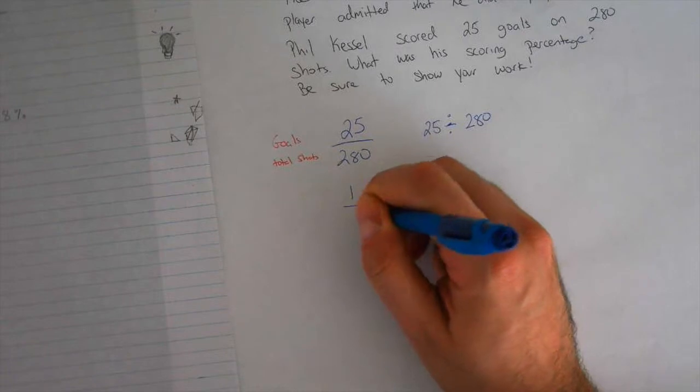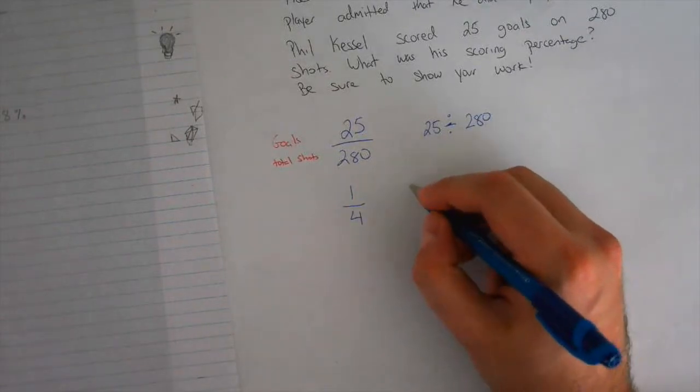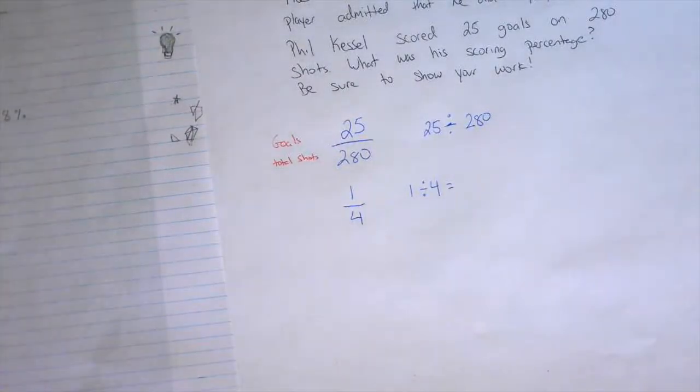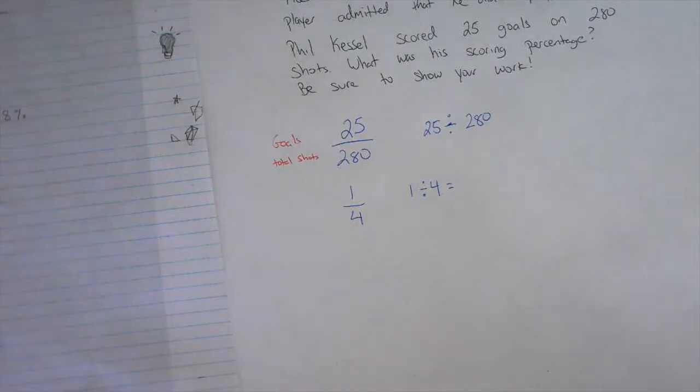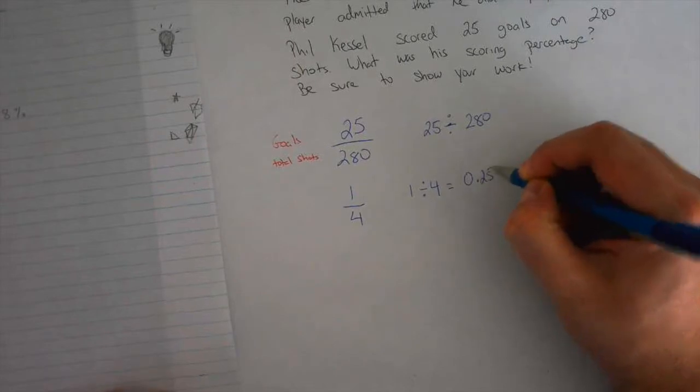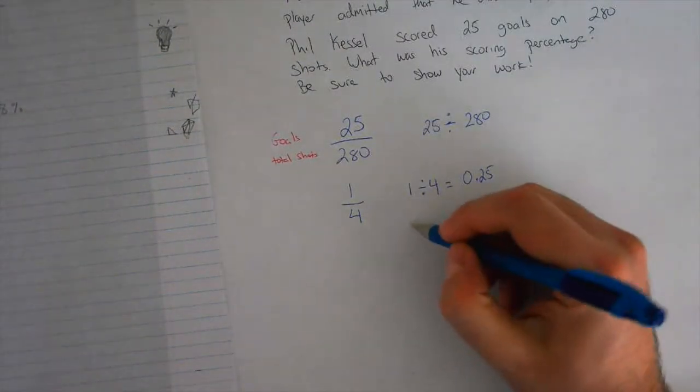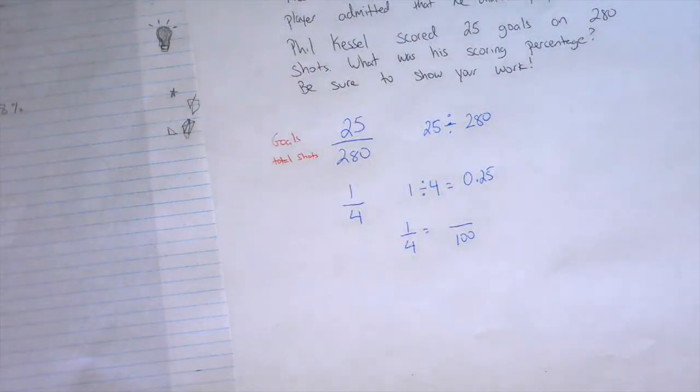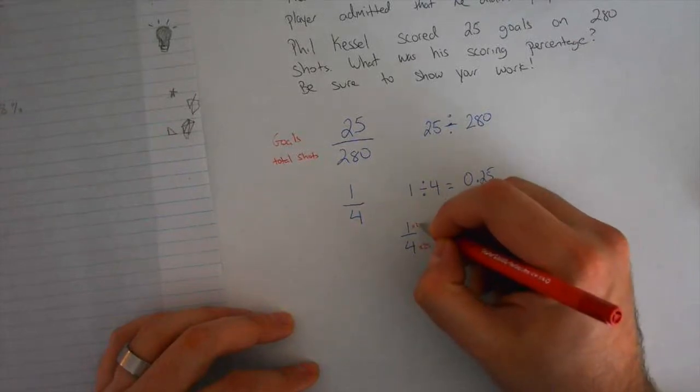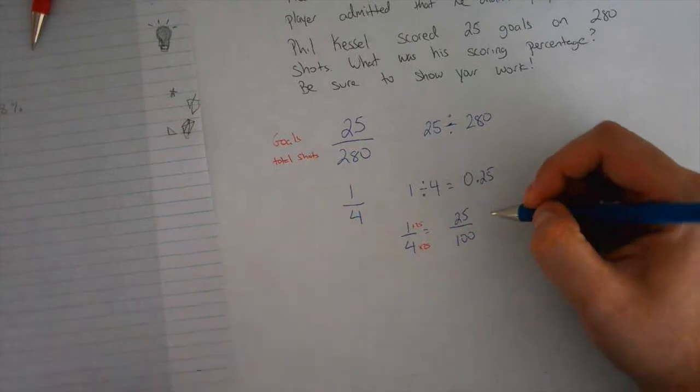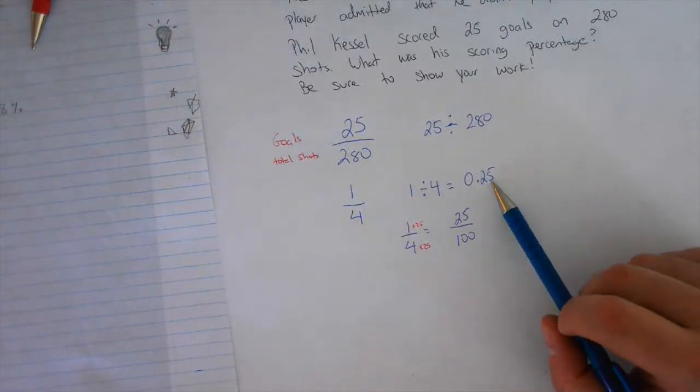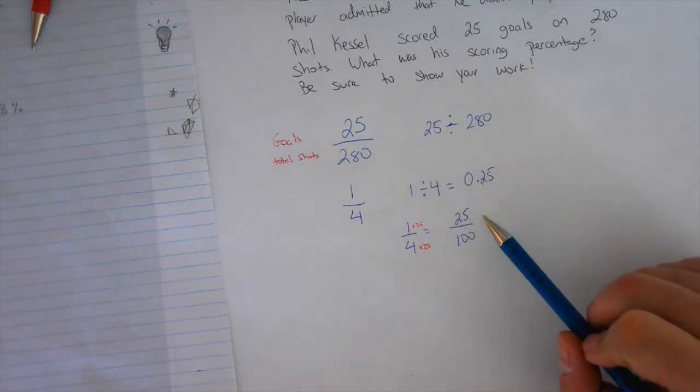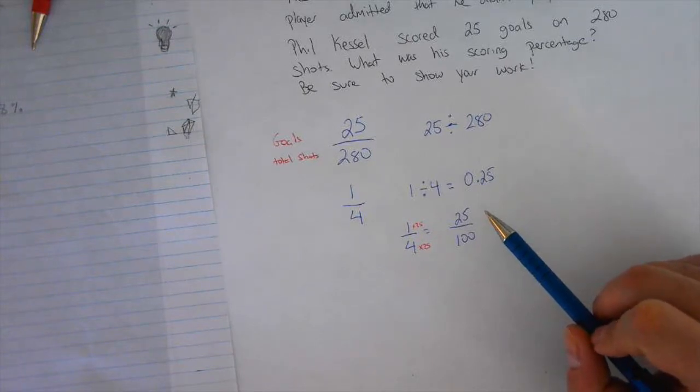If you do 1 over 4, and you do it the way this group did it, 1 divided by 4, what is 1 divided by 4? If you put it on your calculator, or if you figure out in whatever way you do, what is 1 divided by 4? Tell her. It's 0.25. Now, if I had to change 1 over 4 to make it out of 100, what would I do to make it out of 100? You have to multiply this by 25. Multiply that by 25. And your answer is 25 over 100.